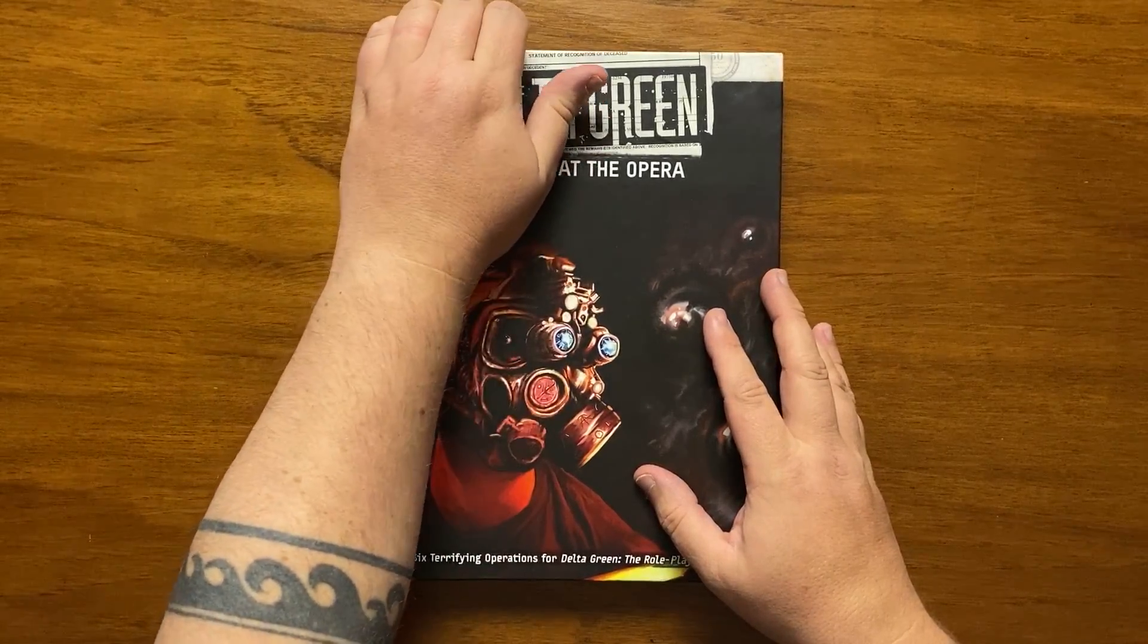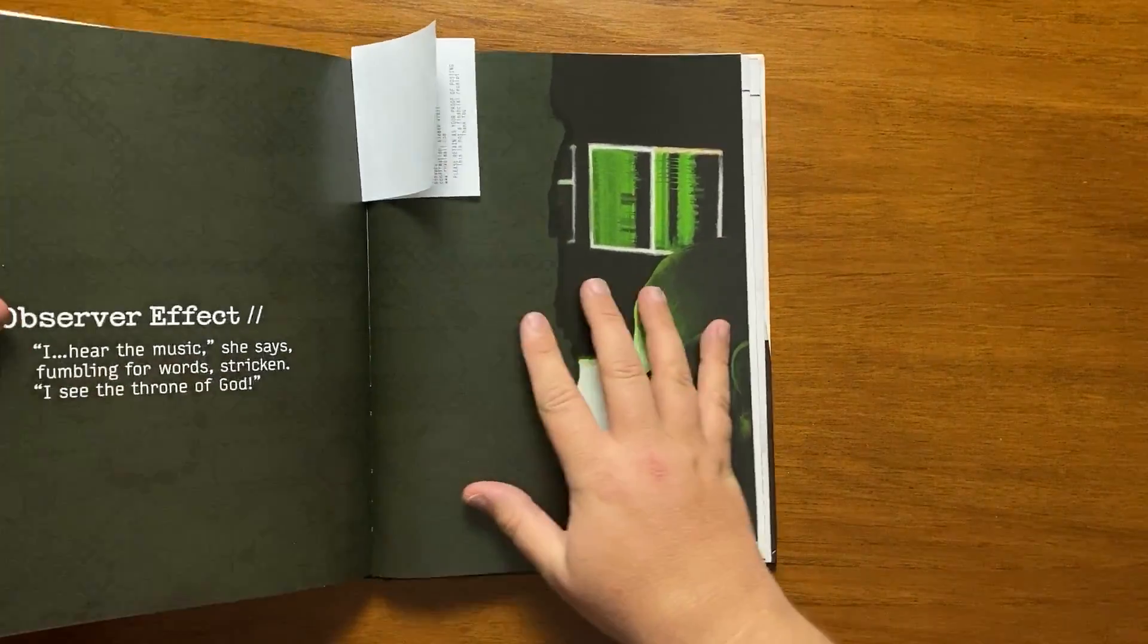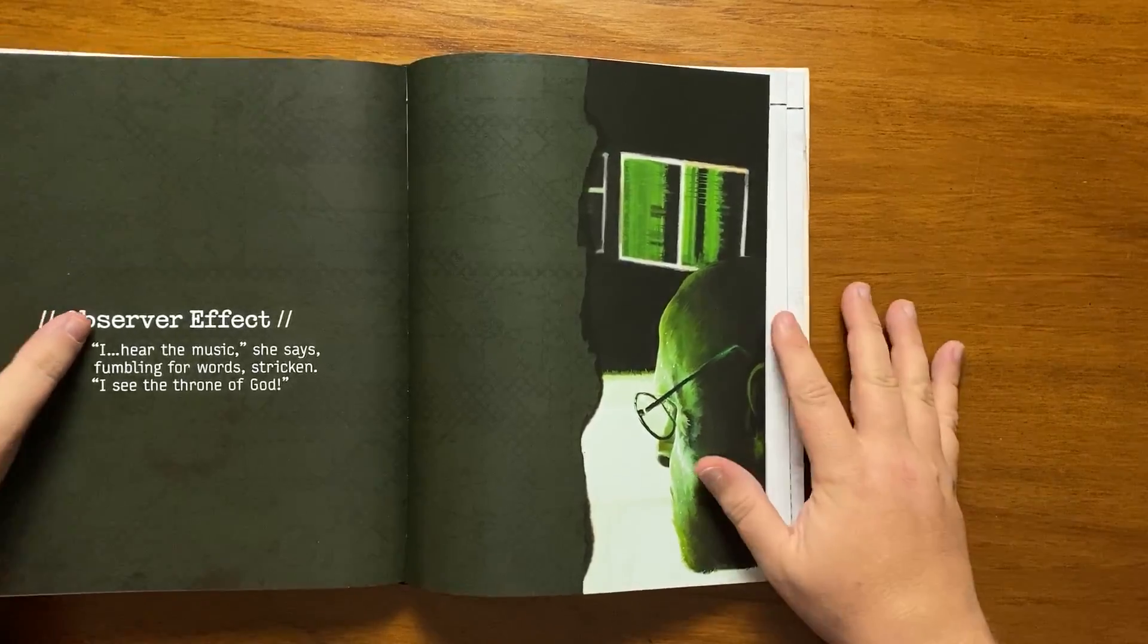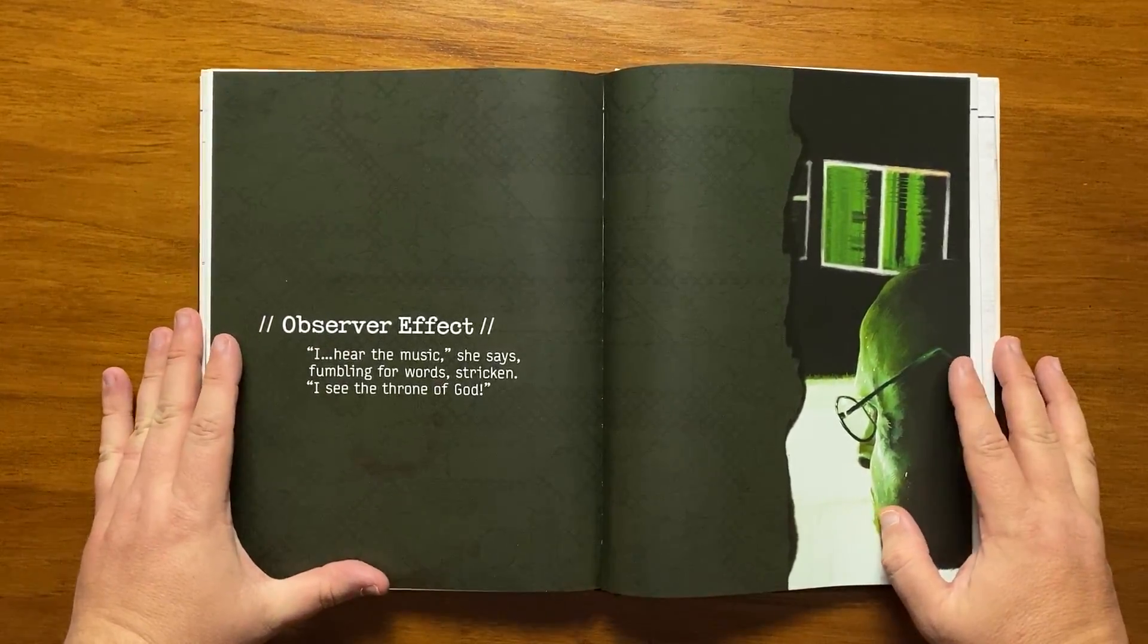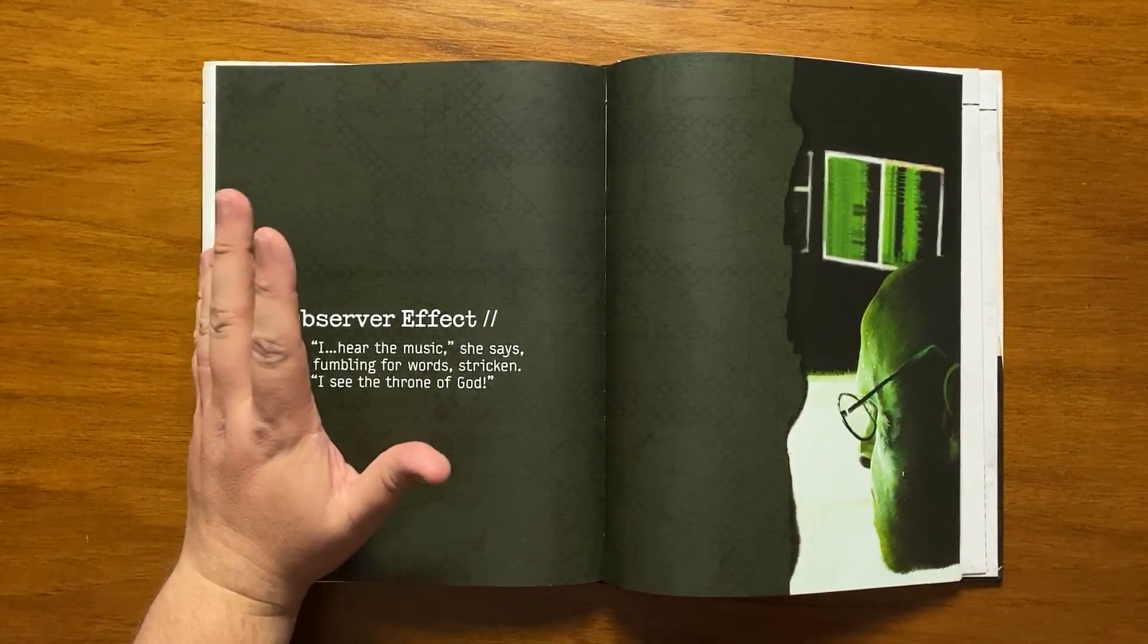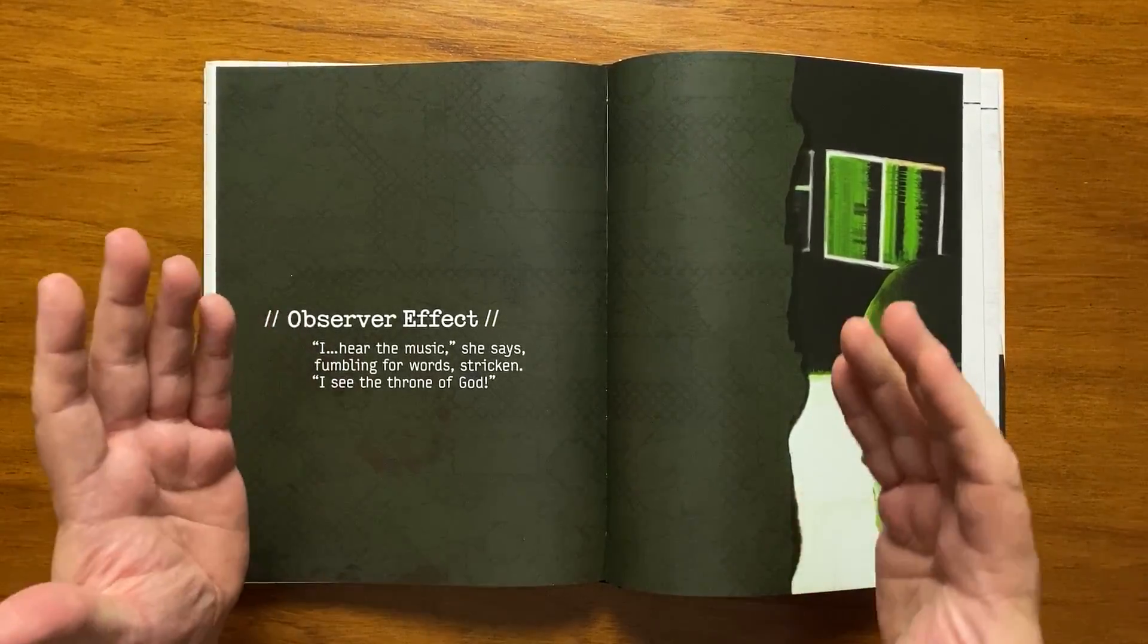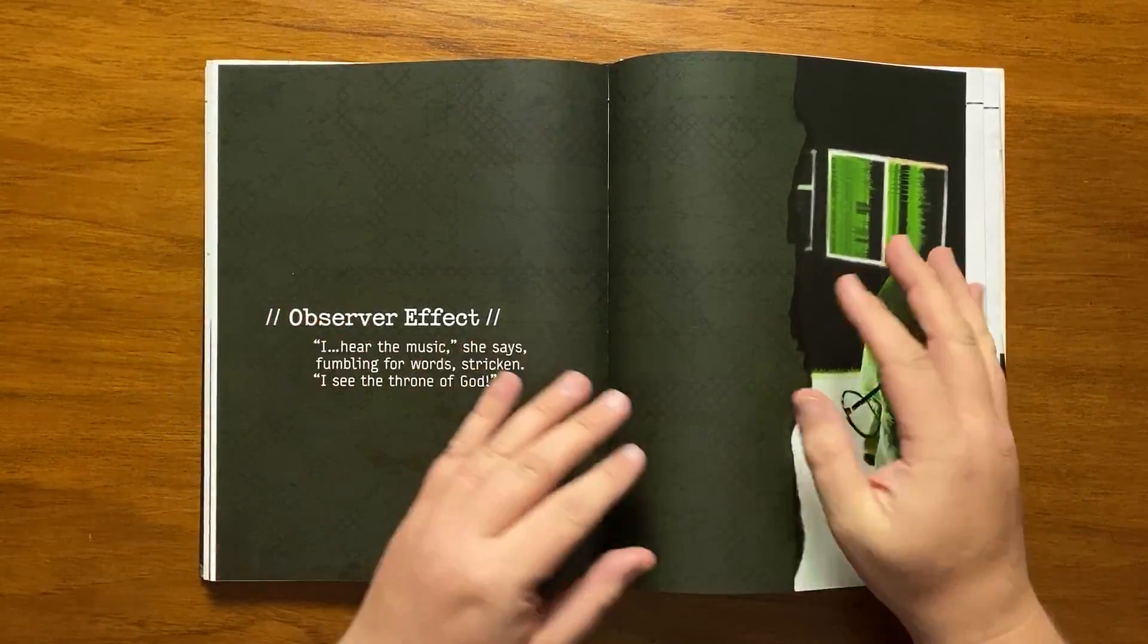Before we begin, I think it's worth clarifying what the Observer Effect actually is. The current simple definition is that the mere observation of a phenomenon inevitably changes that phenomenon. It has been noticed in particle physics, electronics, thermodynamics and quantum mechanics. With this in mind, let's continue.